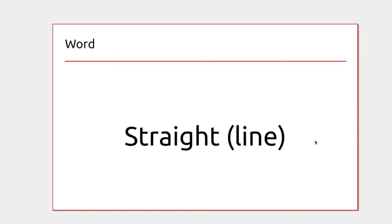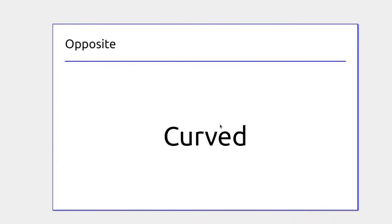If you've got a line that goes from one point to another taking the shortest way, it's straight. But if it then goes up, below, and off to the right, it's curved.